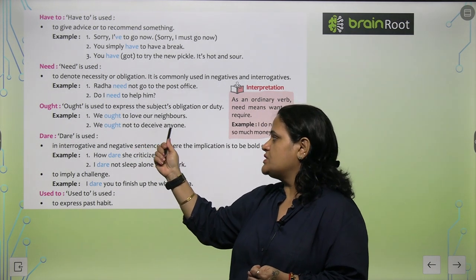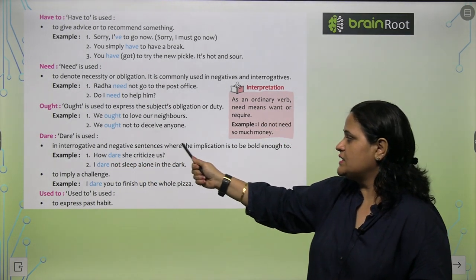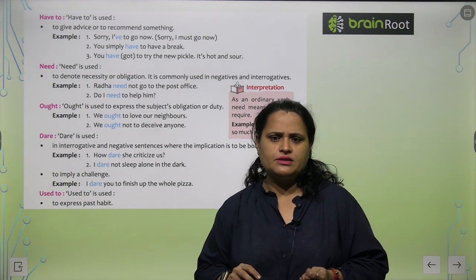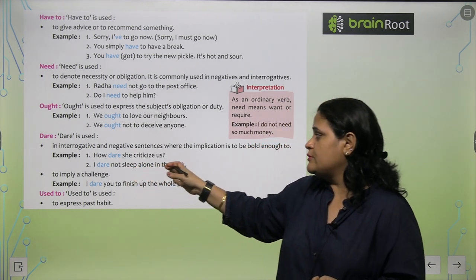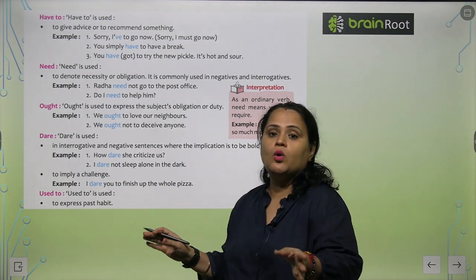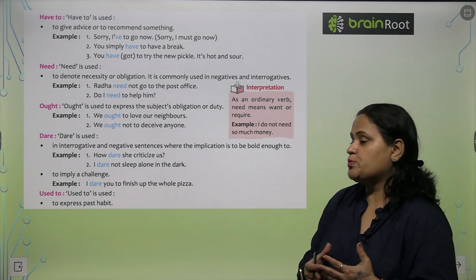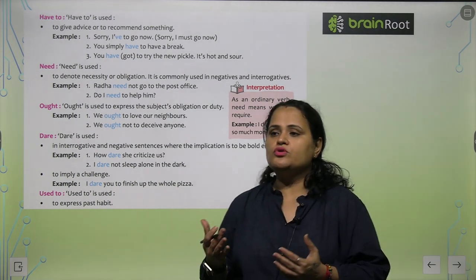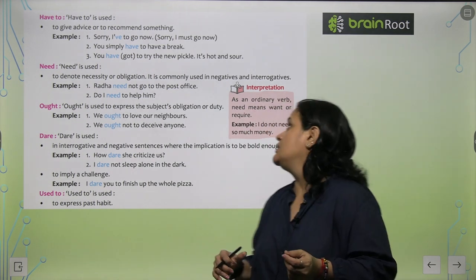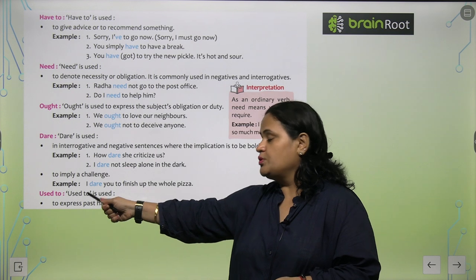'We ought not to deceive anyone.' 'Dare' kab use hota hai? In interrogative and negative sentences where the implication is to be bold enough — like 'How dare she criticize us?' or 'I dare not sleep alone in the dark.' To imply a challenge — like 'I dare you to finish up the whole pizza.' 'Used to' is used to express past habits — like 'I used to go to the temple before six months' — yeh past ki habit ko express karne ke liye use karte hain.